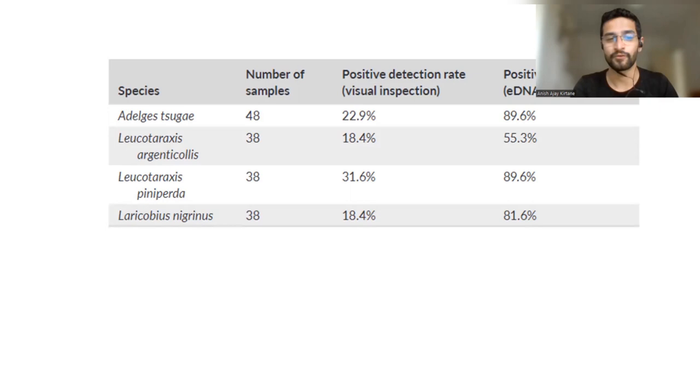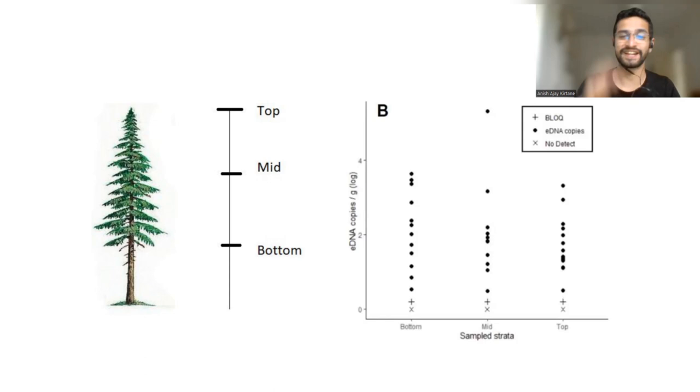Again, looking at the different levels of the tree, the top, mid, and bottom, we didn't see much difference in the concentration of our target species' eDNA. So it's pretty safe to conclude that you can just take samples from the bottom of the tree, and you can find out whether the tree has been infested with hemlock woolly adelgid or not.